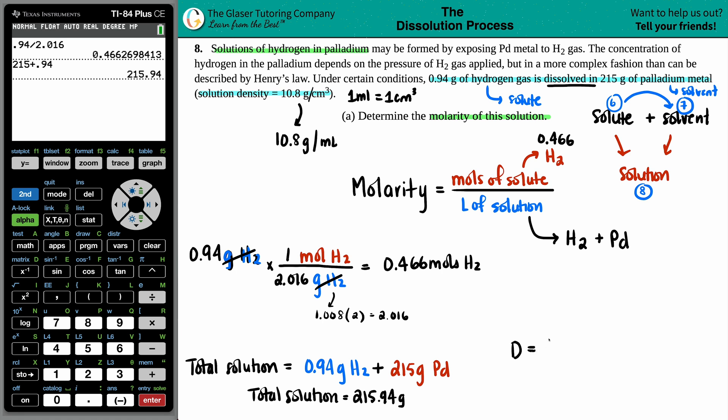Now we can incorporate that density. Density equals mass divided by volume. They gave us a density of 10.8, we just found the mass of 215.94, so we can solve for that volume. 10.8 equals 215.94 divided by x. We can get x up in the numerator by cross multiplying. So we get 10.8x equals 215.94, then divide by 10.8 on both sides.